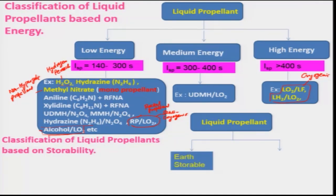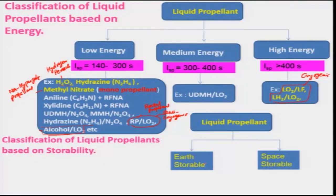Liquid propellant can be divided into two categories based on storability: earth storable propellants and space storable. Earth storable is one which will remain as a liquid and should not undergo changes during storage. The propellants discussed earlier can be stored very easily on the earth and can remain in the liquid phase at ambient temperature and pressure; therefore, these are called earth storable.